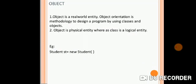Now, what is an object? An object is a real-world entity. Object orientation is a methodology to design a program by using classes and objects. An object is a physical entity whereas a class is a logical entity. This is the way we create an object of the class — for example: Student st = new Student(). Here, 'st' is an object of the Student class.